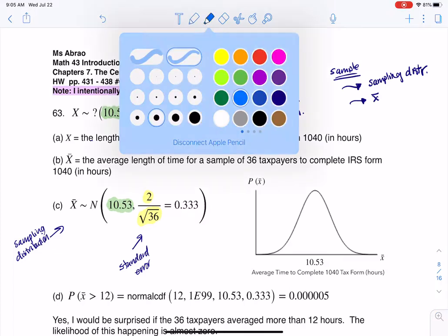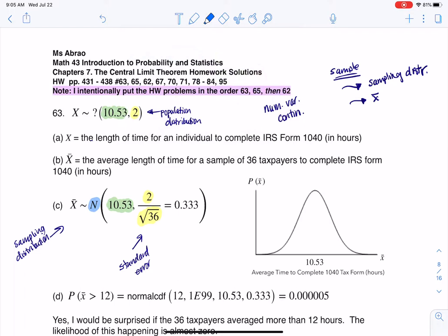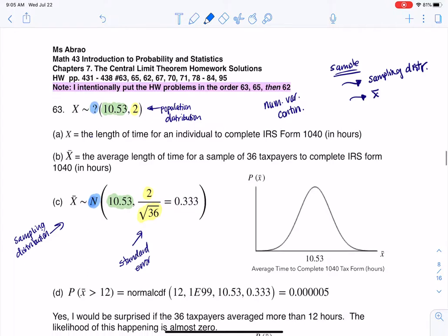Now the key thing here is why was I allowed to say the sampling distribution was approximately normal? Because the population wasn't, it was unknown, we didn't know the shape. But the reason I can put the N here is because the sample size was over 30, and the central limit theorem kicked in.